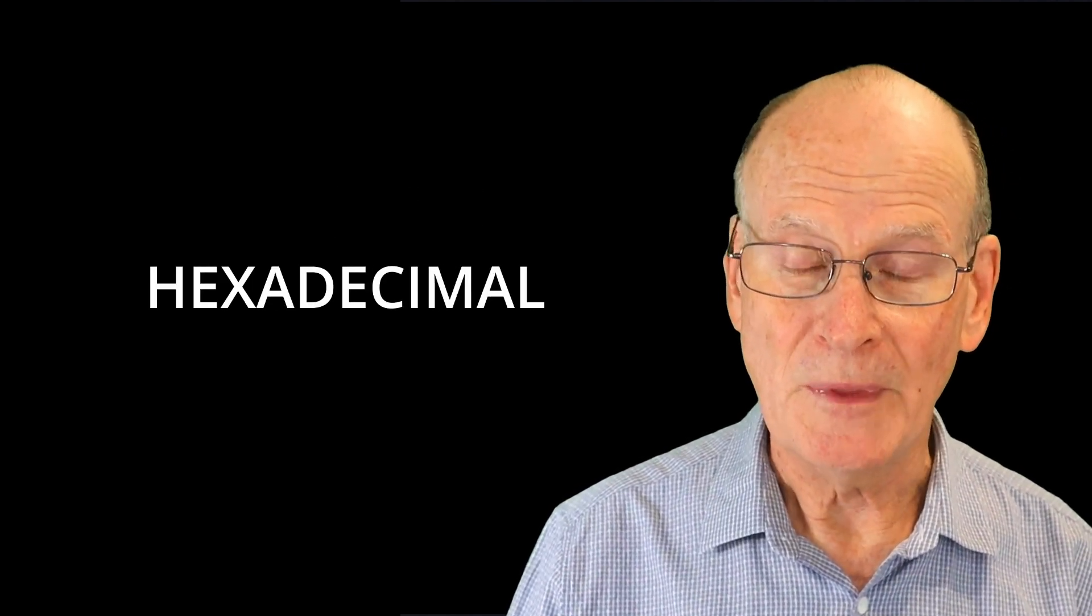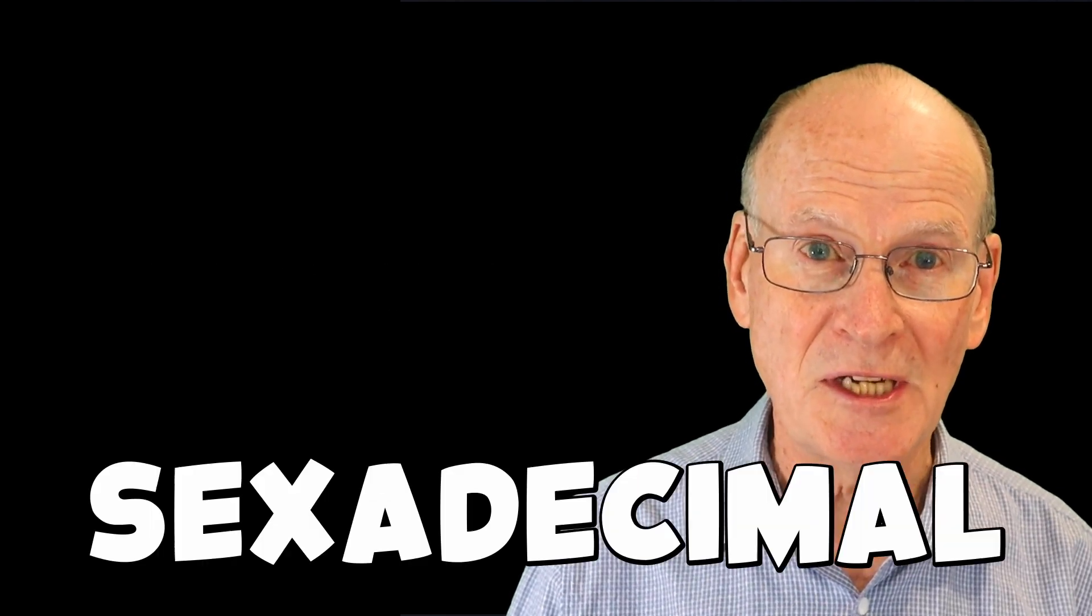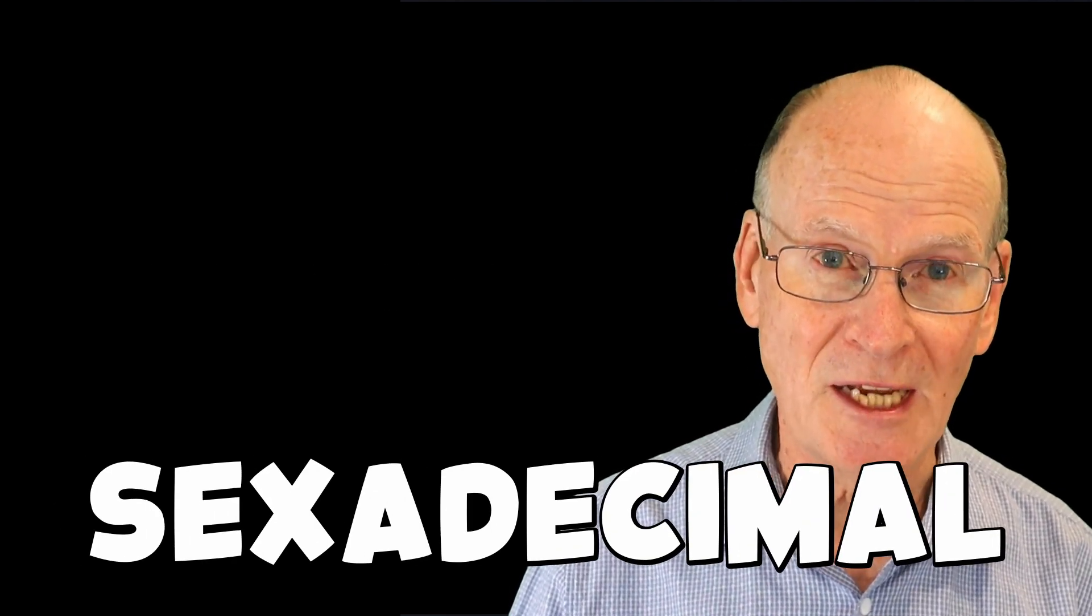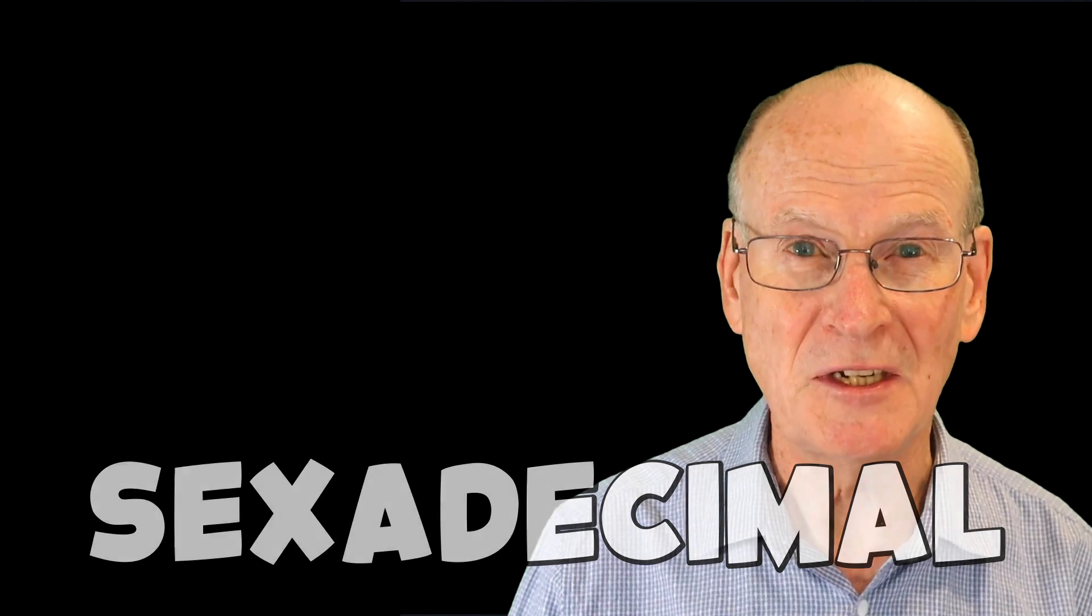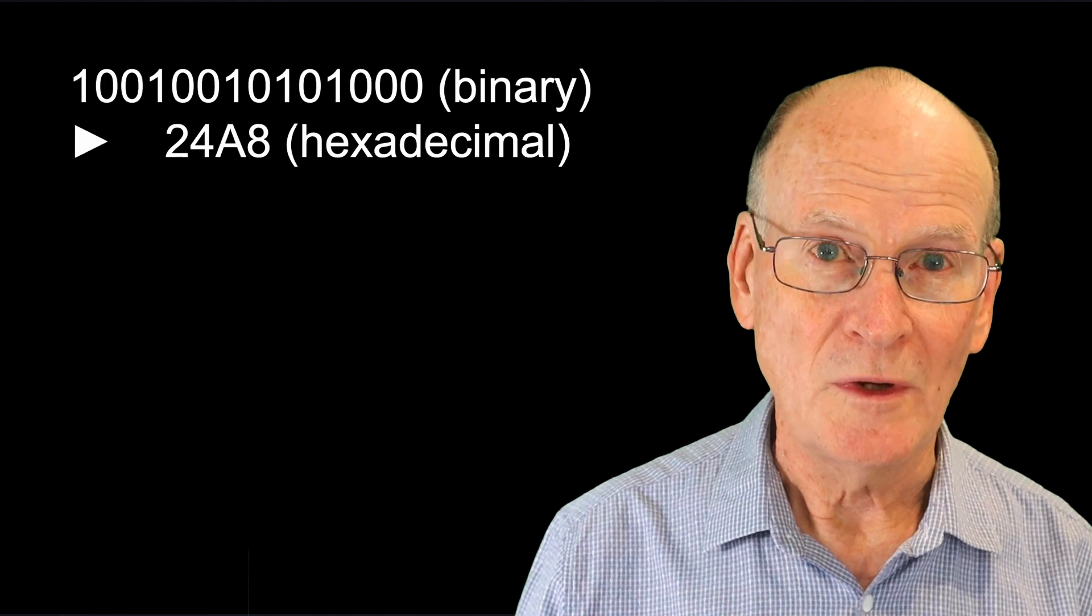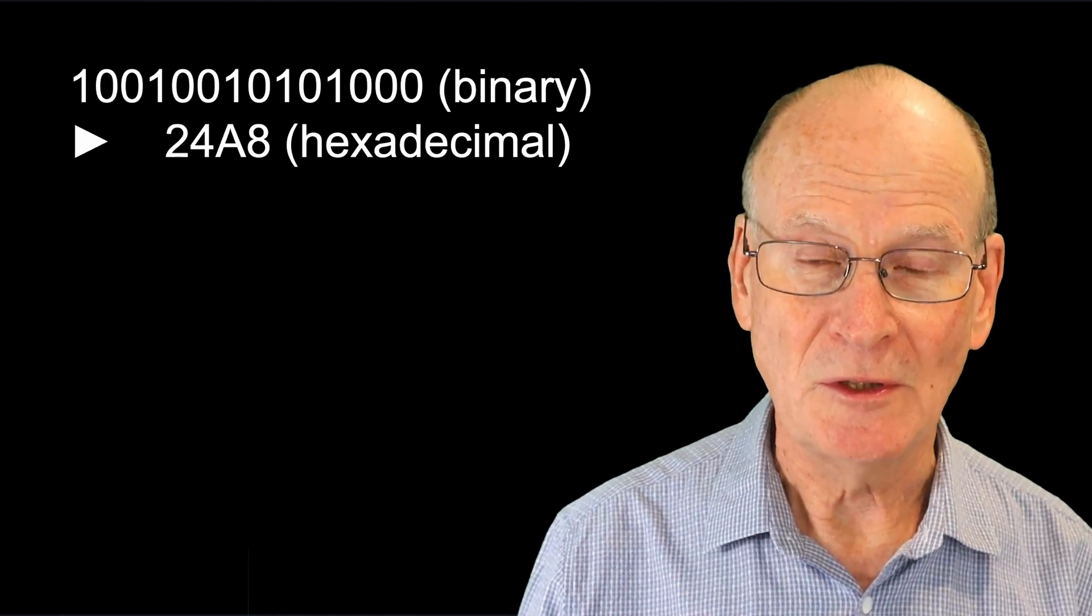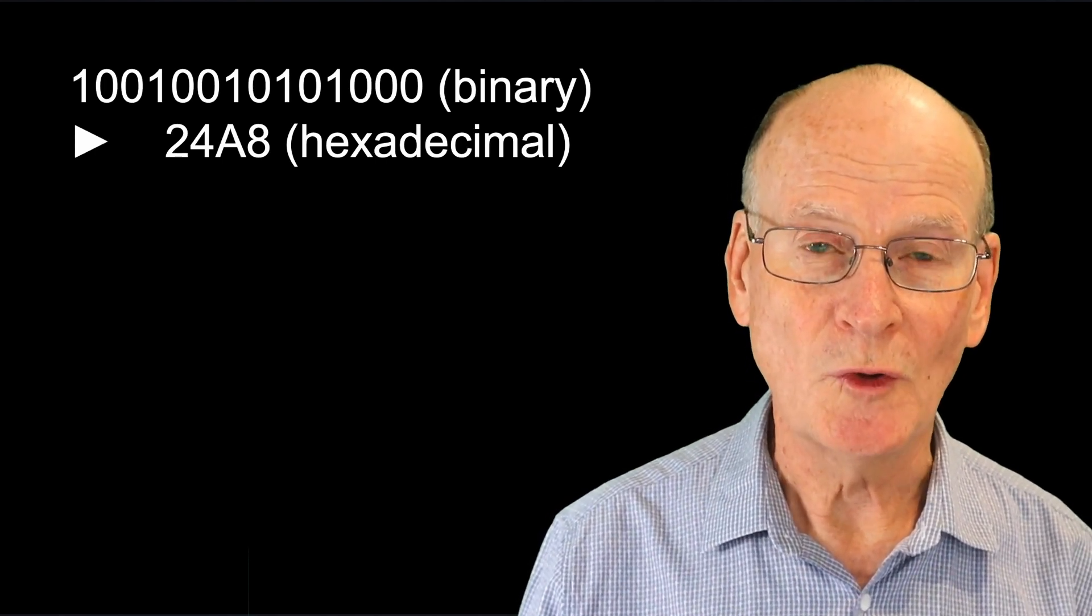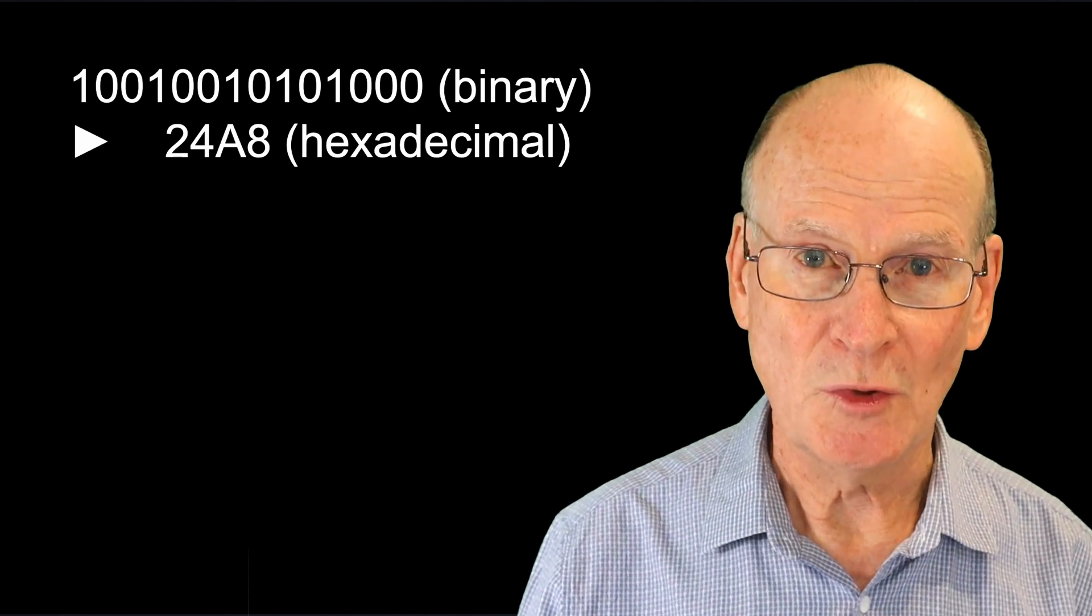Originally, the British called the base 16 sexadecimal from the Latin word sex for 6, but it didn't catch on. If we take this big number in binary and we write it out in hexadecimal, we get this number 24A8, which is much shorter.